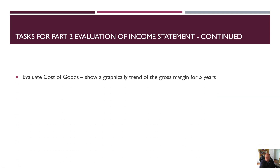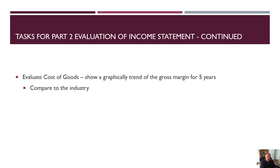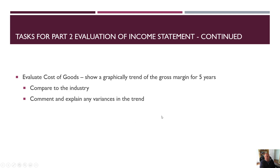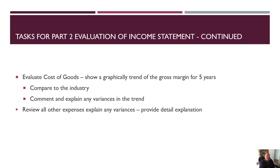Continuing on part two: evaluate the cost of goods sold and show a graphical trend of the gross margin for five years. We want to see it getting better or at least staying the same — if the gross margin is declining, that's something we need to look at and compare to the industry. How does Home Depot compare to Lowe's and other firms? Comment and explain any variances in the trend. Review all other expenses, explain any variances, and if there's a big item, provide a detailed explanation. Then prepare an analysis of the tax provision for three years.